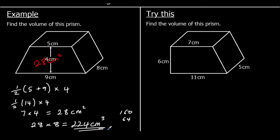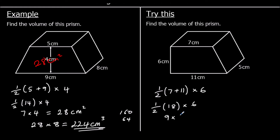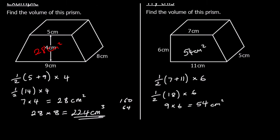And one for you to try — give it a go. Again we've got a trapezium, so we're going to take half the sum of the parallel sides and times the distance between them. That's half of 18 times 6, which is 9 times 6, which is 54 centimeters squared. So we've got 54 centimeters squared times 5. 54 times 10 is 540, half of that is 270 centimeters cubed.